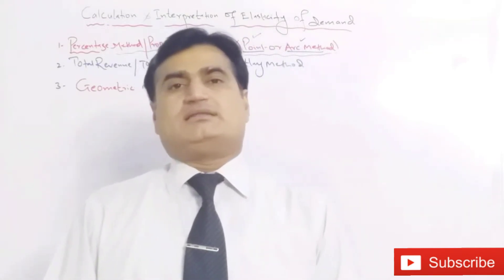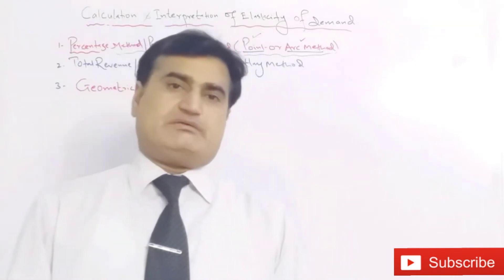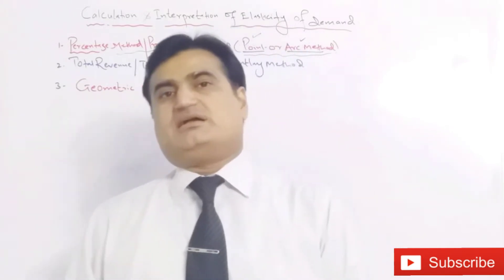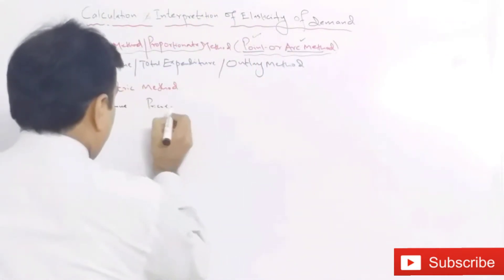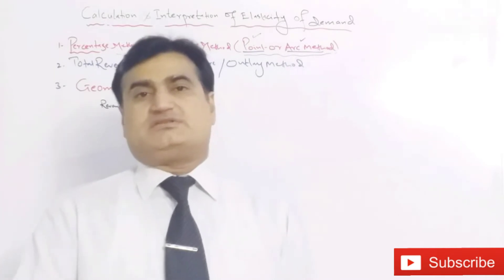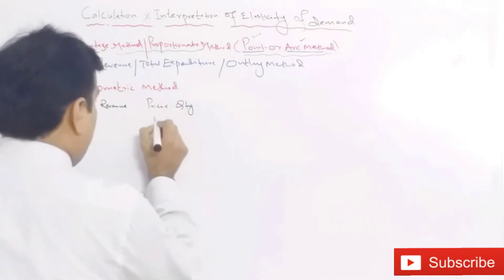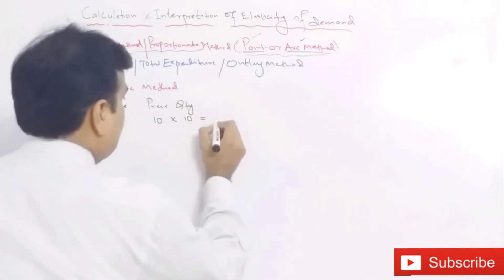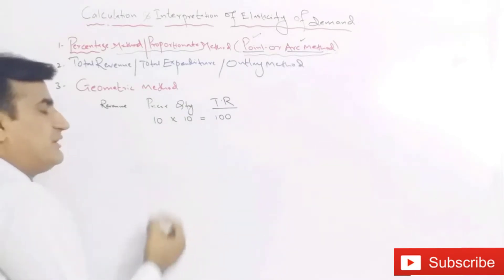Alfred Marshall told that there is a relationship between price elasticity and total revenue. Before discussing how to calculate the elasticity of demand, it is necessary to understand what revenue is. The total revenue is price multiplied by quantity. Revenue is the amount received by the seller through the sale of goods and services. For example, when the price is 10 and the quantity sold is 10, the total revenue is 100.